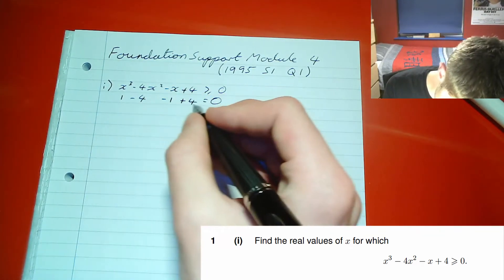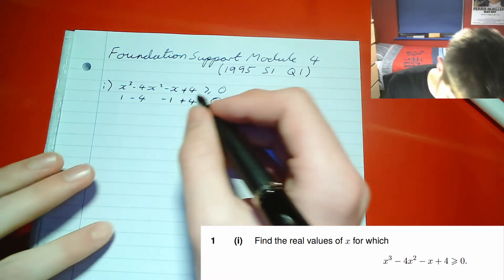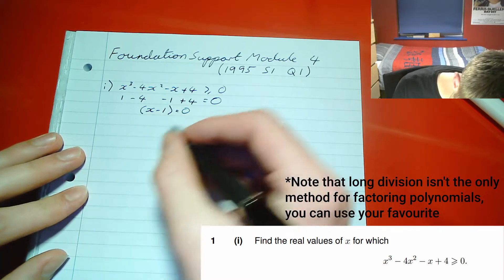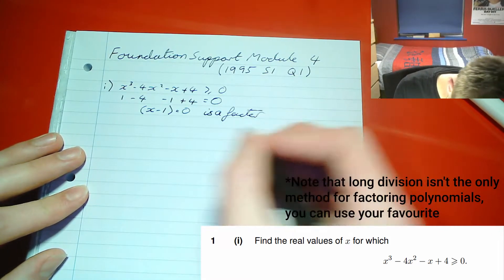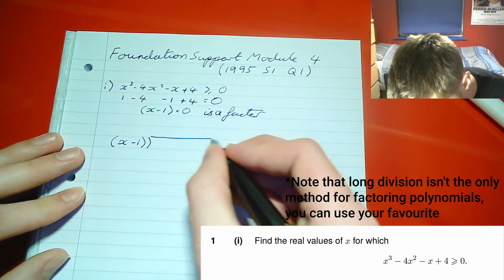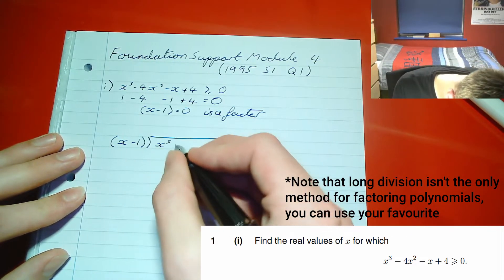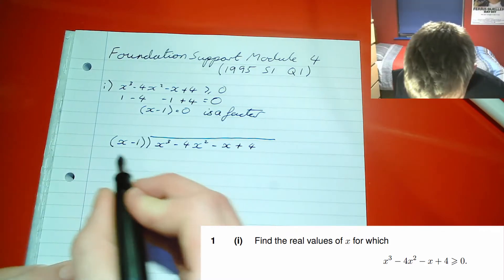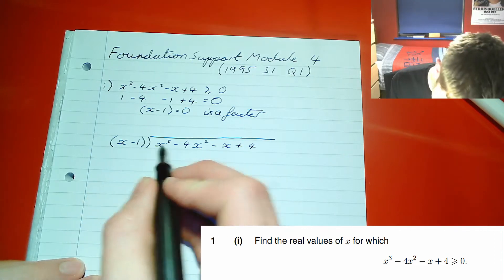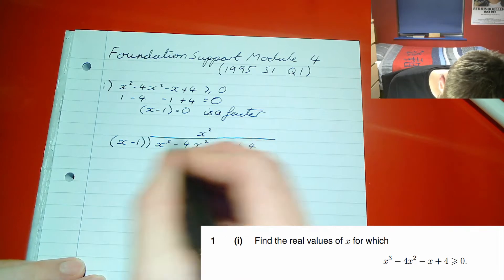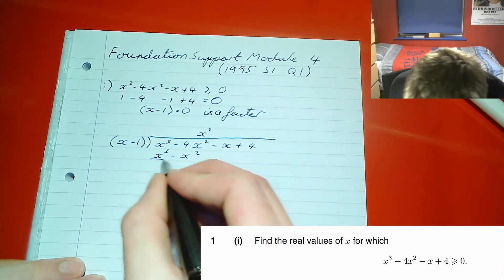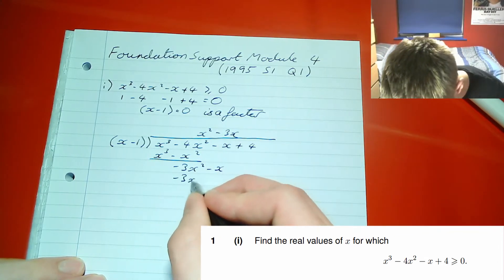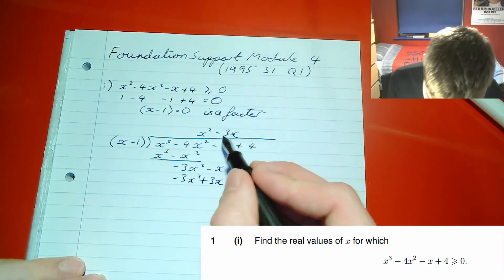Because x equals one solves the cubic, we know that (x minus 1) is a factor. We can use algebraic long division to factor it out. It works just like regular long division but with algebraic terms. We ask: how many times does x go into x cubed? We get x squared. Multiplying x squared by (x minus 1) gives x cubed minus x squared, and we subtract to get negative 3x squared, then carry the next term down.